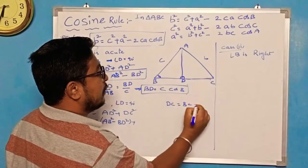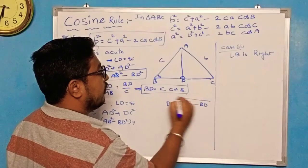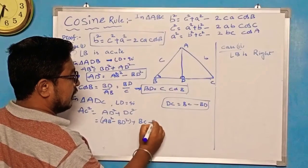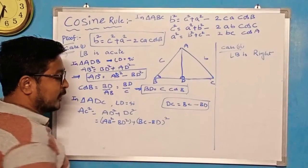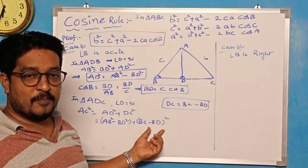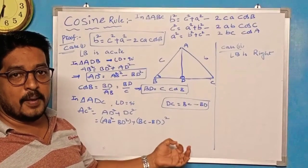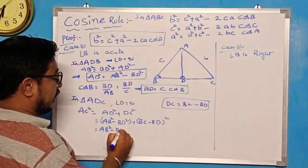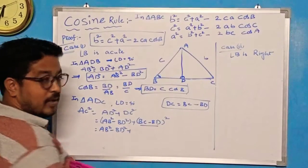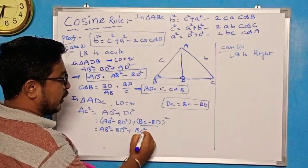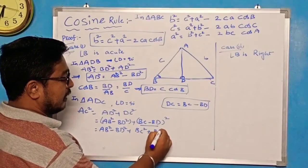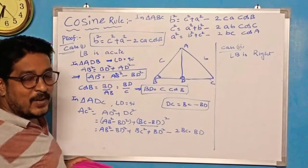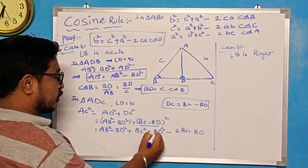So DC = BC − BD. Using the identity (A − B)² = A² + B² − 2AB, we get DC² = BC² + BD² − 2·BC·BD. Substituting into AC² = AD² + DC² = (AB² − BD²) + (BC² + BD² − 2·BC·BD), the BD² terms cancel.